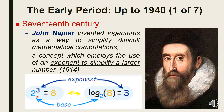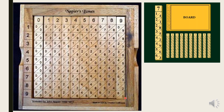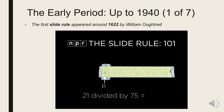A logarithm is a mathematical operation that determines how many times a certain number, called the base, is multiplied by itself to reach another number. One of John Napier's most significant contributions was Napier's Bones.